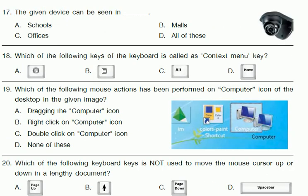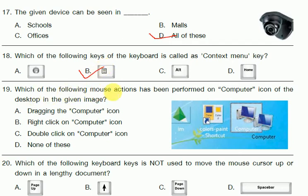Question 16: The given image is of a popular mobile game. Its name is My Talking Tom. Question 17: The given device can be seen in school, malls, and offices — this is a CD used in all of these. Question 18: Which of the following keys on the keyboard is called the context menu key? The answer is B.